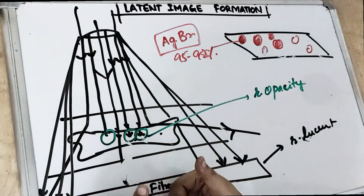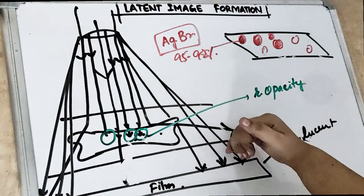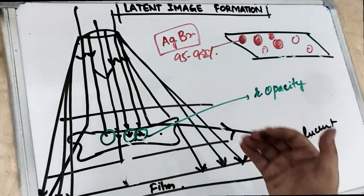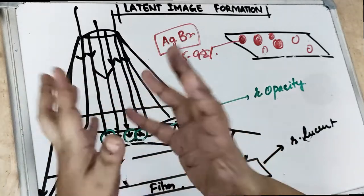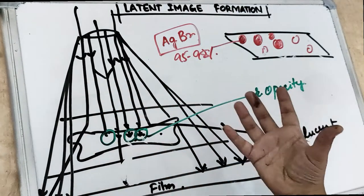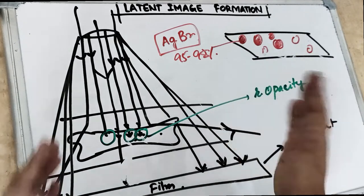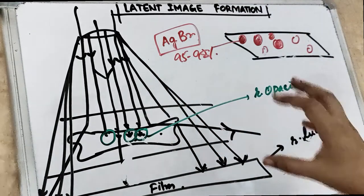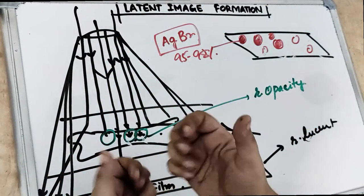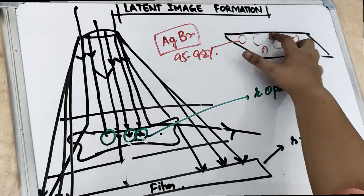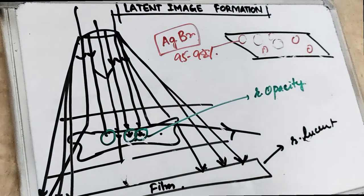This x-ray crossing the tissue and reaching the film interacts with the silver. When a high energy photon comes in, there is an electron which comes out of its shell, because this high energy photon will kick out the electron out of the shell. Once the electron is out of its shell, we know that there is some movement going on, and we immediately catch it — all the movement of the silver — we just catch it.